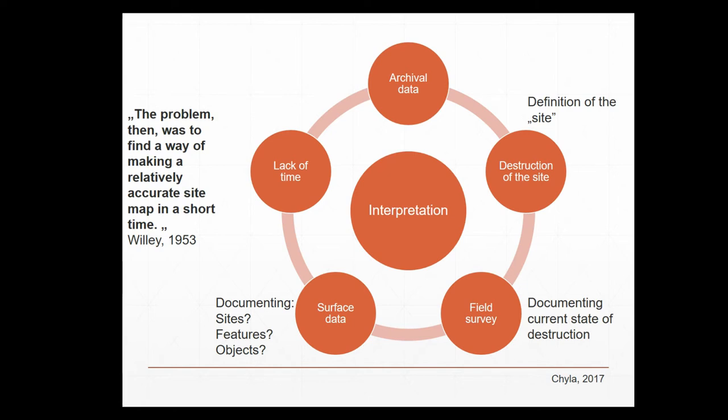The result is an online map you can browse through, viewing the attribute table. You can export a single record as a report which includes photos and the location of every artifact — a very good solution for summarizing your research. Additionally, the summarization can be shown in a statistical way as a chart.